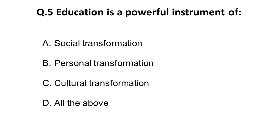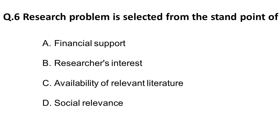The fifth question: education is a powerful instrument of — options are A) social transformation, B) personal transformation, C) cultural transformation. If you are educated, there is certainly personal transformation, cultural transformation also takes place, and social transformation as well. So the correct answer is all of the above — education is a powerful instrument of all the above options.